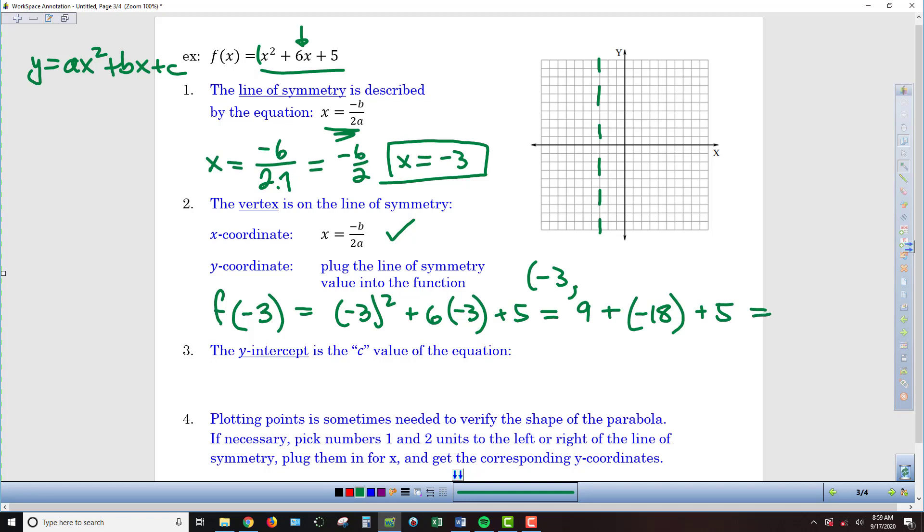If we finish this off, 9 plus -18 is -9. -9 plus 5 is going to give us -4. So the y-coordinate of our vertex is -4. We have the coordinates of our vertex.